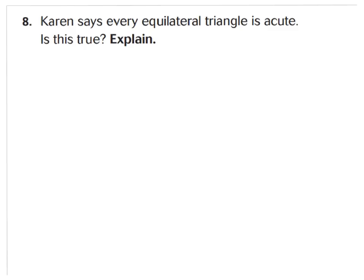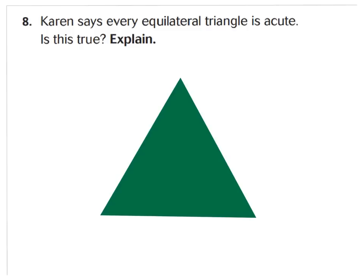For question number eight, it says Karen says that every equilateral triangle is acute. Is this true? Explain why. Go ahead and pause your video. An equilateral triangle means all of the sides are the same length. For it to be equilateral, the angles can always be acute — they're never right and they're never obtuse. So we have to agree with Karen; she is correct.